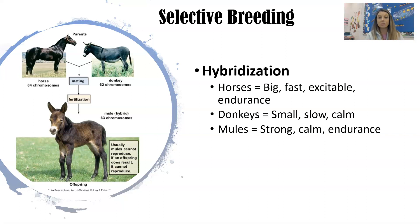Sometimes hybridization comes with disadvantages. Mules are infertile — they cannot produce offspring. That's a result of hybridization, so to get a mule you actually have to cross a horse and a donkey. You can't breed mules with each other.